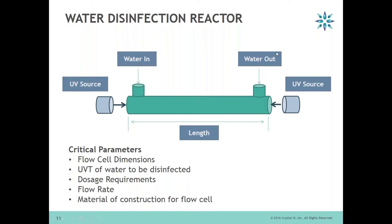We have water in and water out. Some of the critical parameters we really need to follow are flow cell dimensions — basically the length and diameter of the flow tube we are using. What is the UV transmittance of the water to be disinfected? This is very critical because when the transmittance of the water goes low, you need much higher intensity of UV-C. Of course, what is the dosage requirement, the flow rate for the system — how fast the water is coming in and out — and finally, the material of construction for the flow cell.